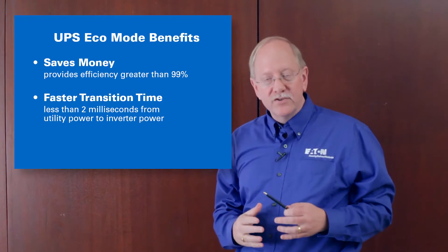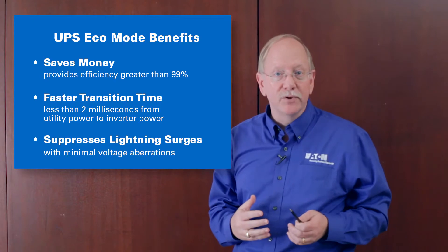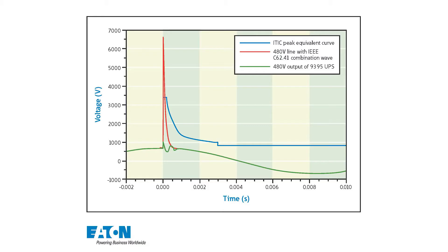One of the primary concerns with Eco mode UPS operation is what if I have a disaster like a lightning strike on the input terminals of the UPS? So this graphic shows how that would look. I have a 6,500 volt very narrow spike here on the input of the UPS in Eco mode, but the green line here shows only a small voltage aberration at the output of the UPS. An Eco mode UPS, a good one, can actually suppress lightning strike style surges.